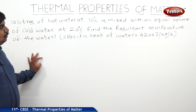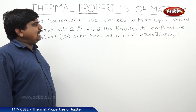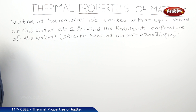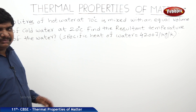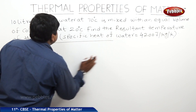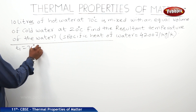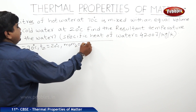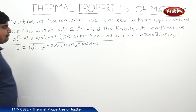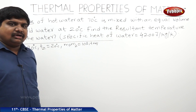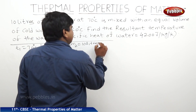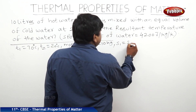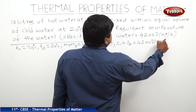10 liters of hot water at 70°C is mixed with an equal volume of cold water at 20°C. Find the resultant temperature of the water, where the specific heat of water is 4200 J/kg/K. So T1 = 70°C, T2 = 20°C, M1 = M2 = 10 liters = 10 kg (since water has density 1 g/cc), and S1 = S2 = 4200 J/kg/K.